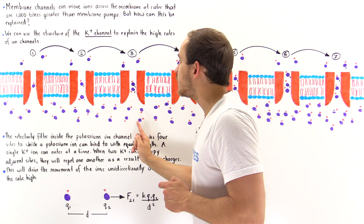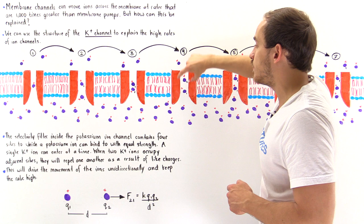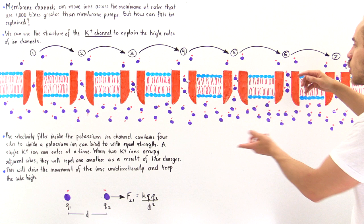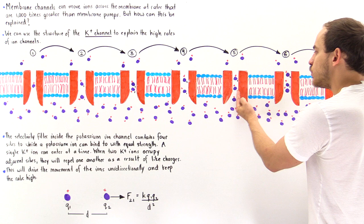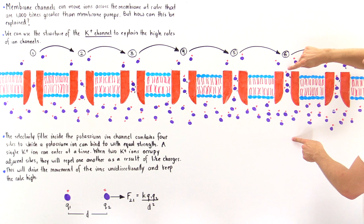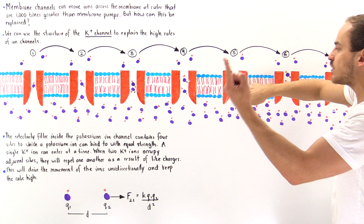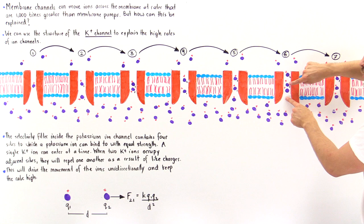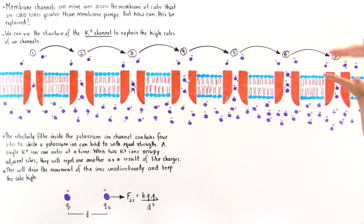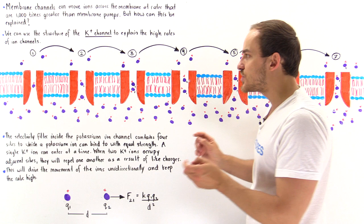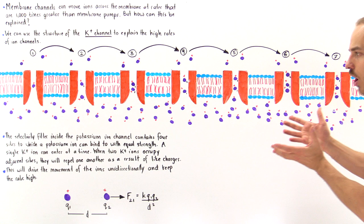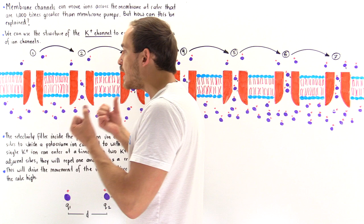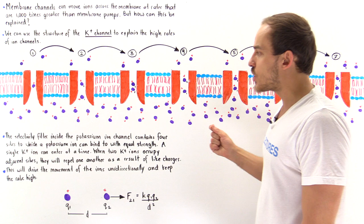This force propels the ion to move to the third site along the selectivity filter. The process then continues: another ion moves into the aqueous cavity; that ion moves into the fourth site; the next shifts from site one to site two; and another enters site one. Again, because these charges are in close proximity they repel, shifting one from site two to site three, and forcing another out the other side of the membrane. It is this electrostatic repulsive force that drives the process and raises the rate to such a high level.